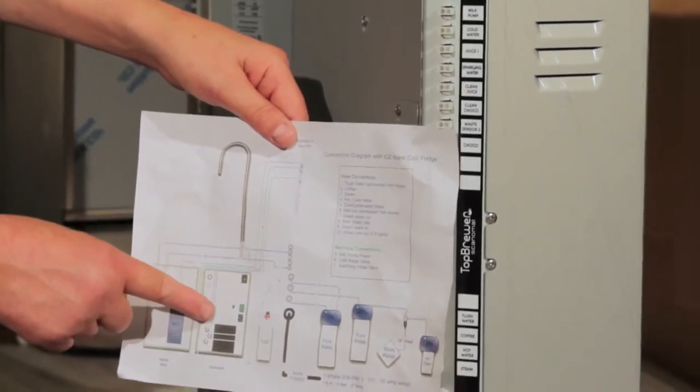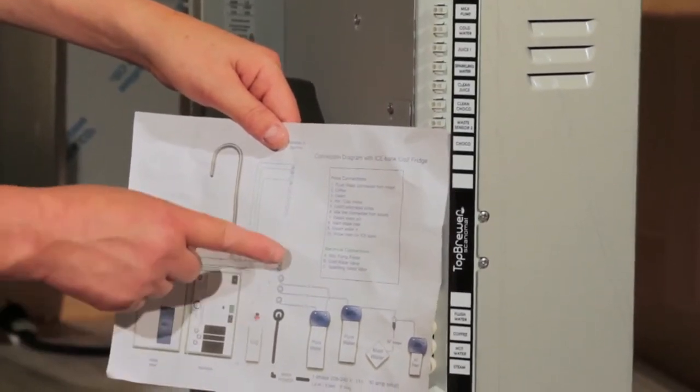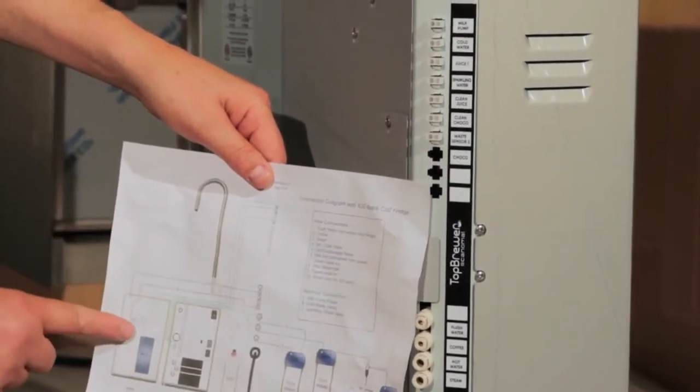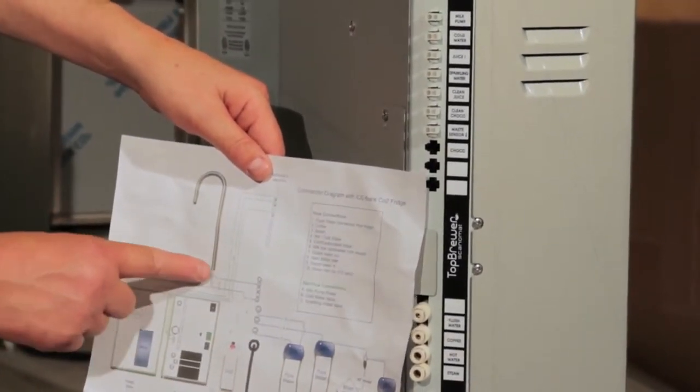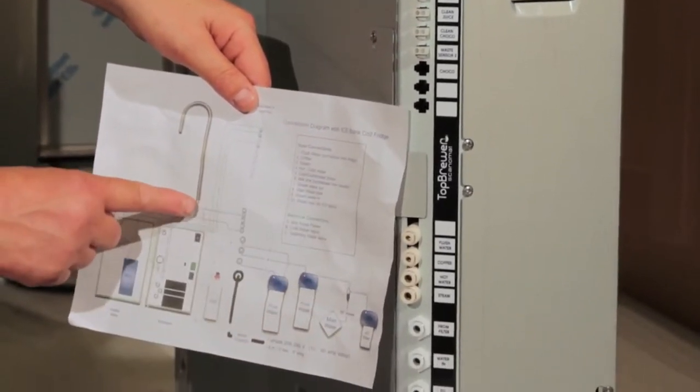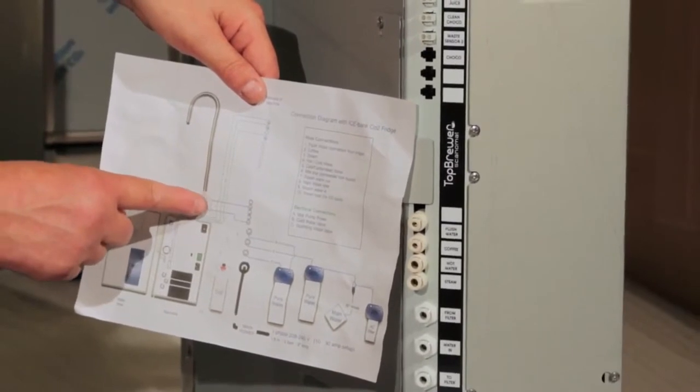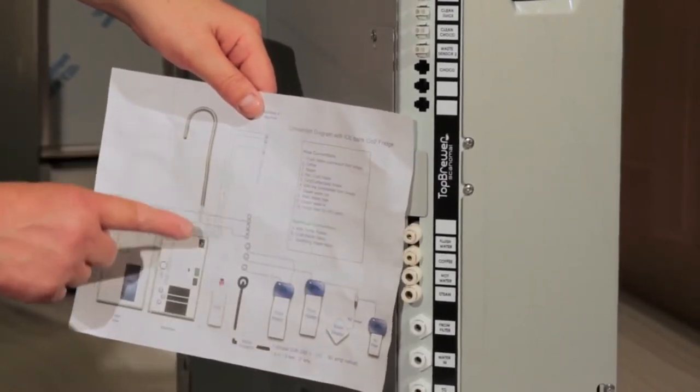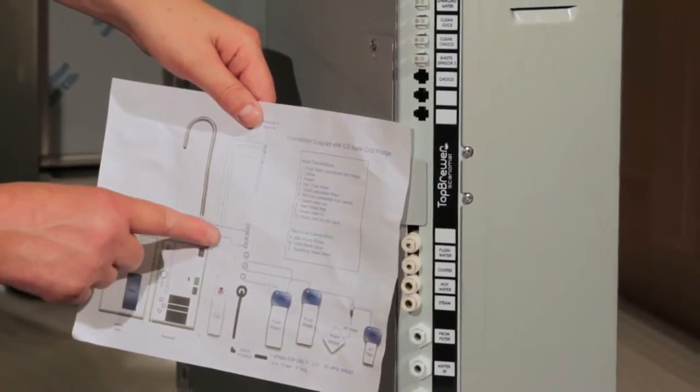Our next connection is going to be the flush water, which is going to come from the milk right into flush line, followed by coffee, which is number two. That goes right into coffee, and that's right from our swan neck.